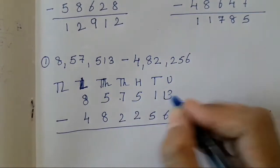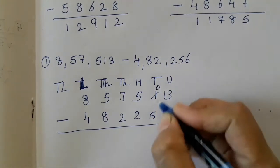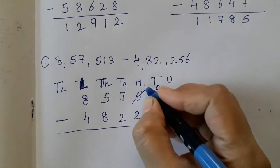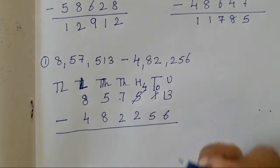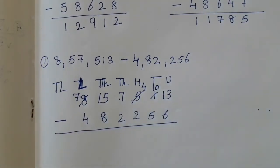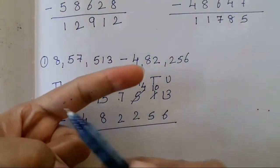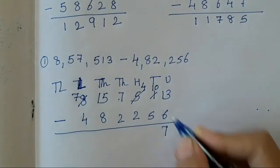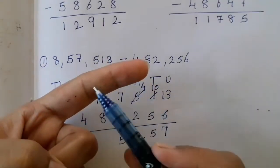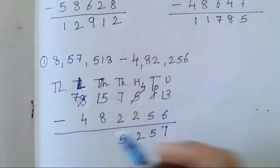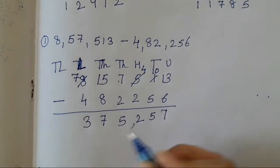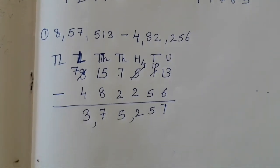Now 3 cannot be subtracted, so 13. 1 cannot be subtracted, so we borrowed 1 from 0 — so 0. 0 cannot be subtracted, so 10. 1 we have borrowed from 5, so 4. 4 and 2 can be subtracted. 7 and 2 can be subtracted but 5 and 8 cannot, so borrow 1 from 8 — it will become 7. Count after 5: 6, 7, 8, 9, 10, 11, 12, 13 — so 7. 10 minus 5 is 5. 4 minus 2 is 2. 7 minus 2 is 5. Count to 15 — so 7. 7 minus 4 is 3. So your answer is 3,75,257.